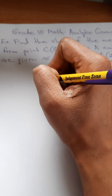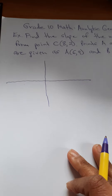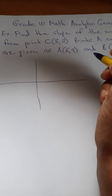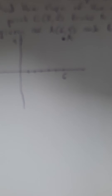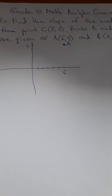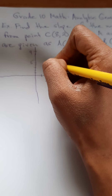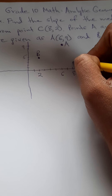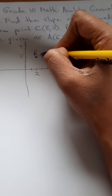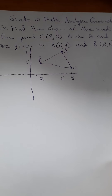I'm going to do a quick sketch — it doesn't have to be exact, just to show what the median looks like. In analytic geometry you should always graph it out first so you know what you're dealing with. Point A is at (6, 9), point B is at (2, 5), and point C is at (8, 2). The sketch is not to scale — make sure you use graph paper when doing this.